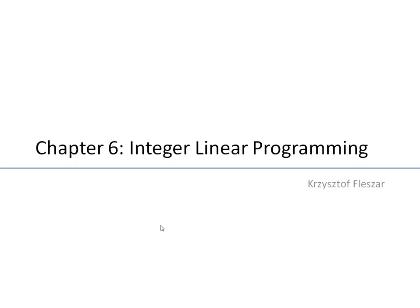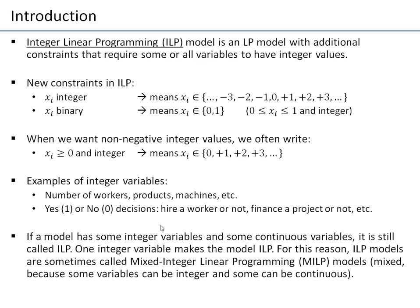Chapter 6 is about integer linear programming problems. An integer linear programming model is a linear programming model — we still have a linear objective and linear constraints — but we have some additional constraints which are not linear. These constraints require some or all variables to have integer values.